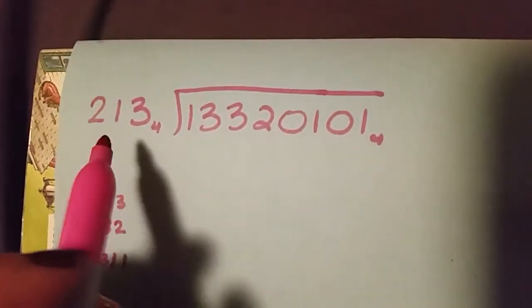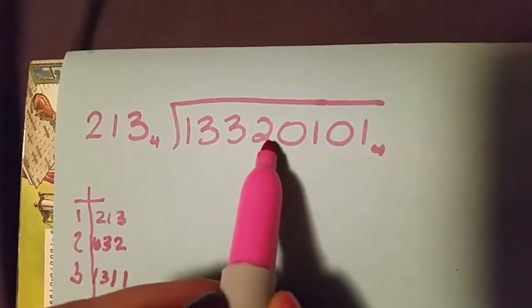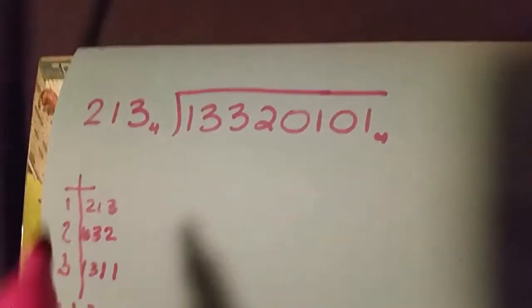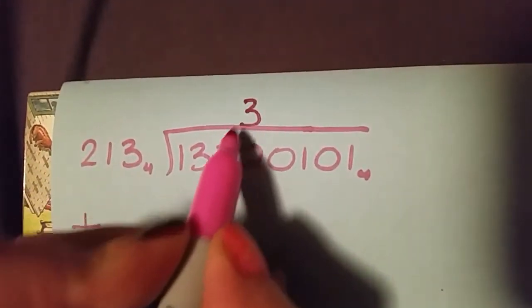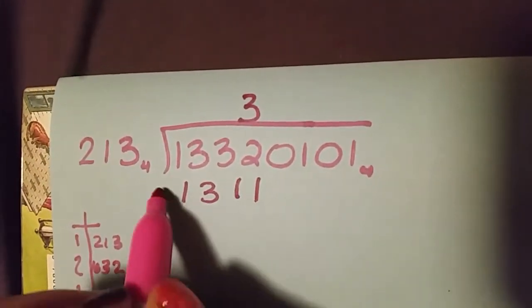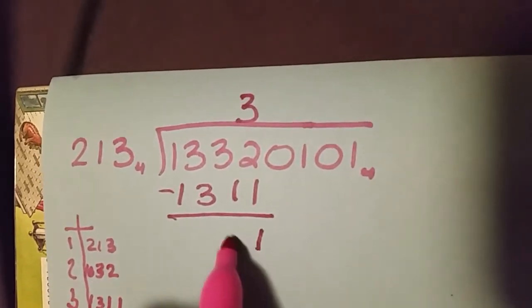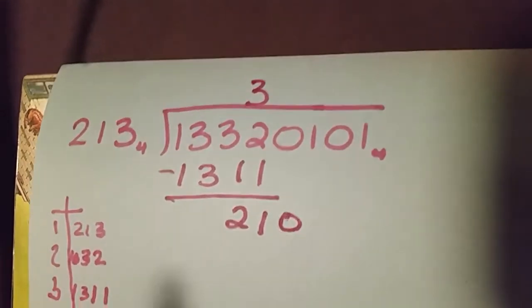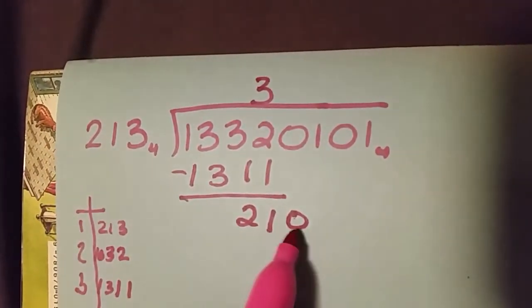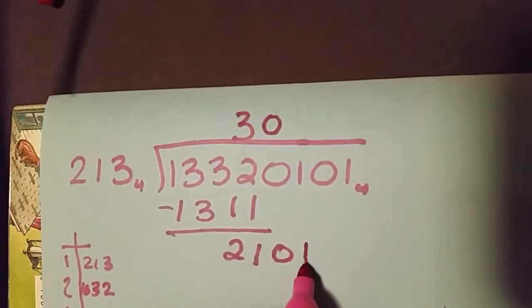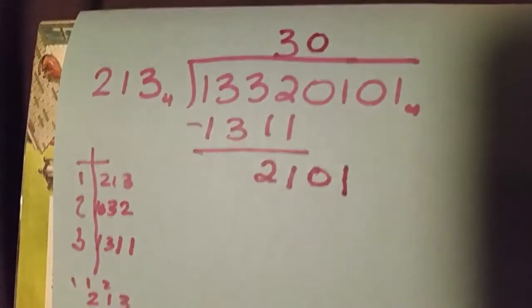Our multiplication table is ready and we begin the problem. We need to get 213 (base 4) into 1332. The first chunk we can work with is 1332. How many times can 213 go in there? Three times. Three groups of 213 gives us 1311. We subtract and we have one left here and two left here. We bring down the next digit, which is a zero. But 213 is too large to fit into that, so we place a placeholder zero up top and bring down the next digit.